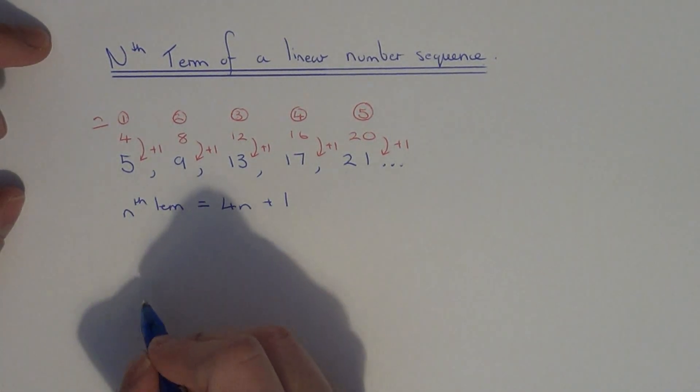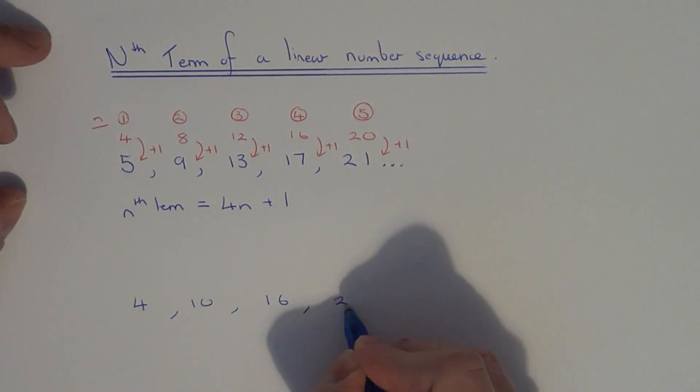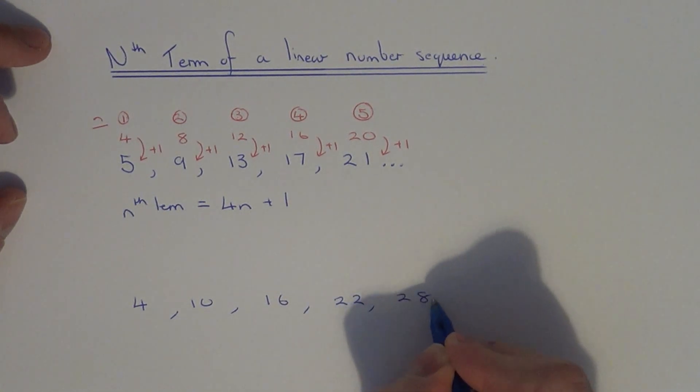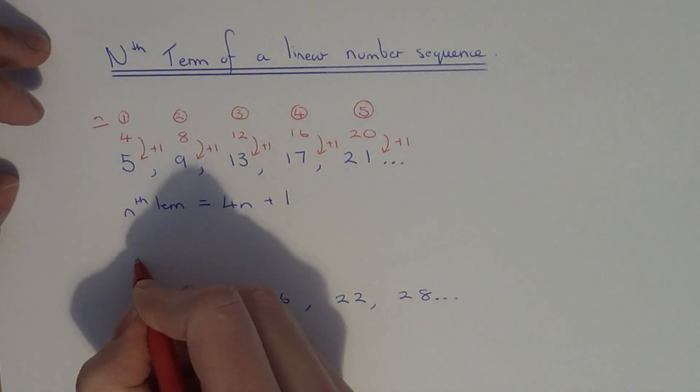Let's do one more example. So this time we've got 4, 10, 16, 22, 28. So first of all write the numbers 1 to 5 above the top.